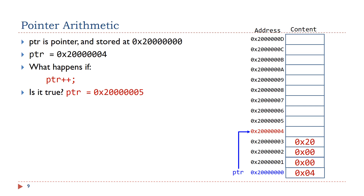What will happen if we increase the pointer by 1? Suppose the pointer ptr is stored at memory address 0x2000000 in hex, and the content of this pointer is 0x2000004 in hex. Here we assume each word is stored in memory in little endian format. If we execute ptr++, what is the content of ptr? Is it 0x2000005 in hex? The answer is: it depends.